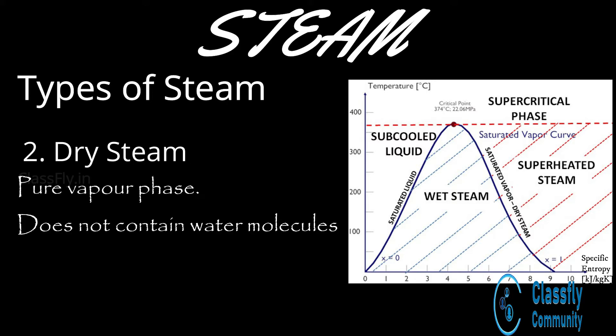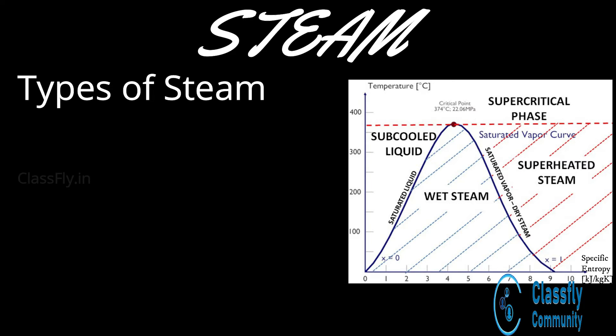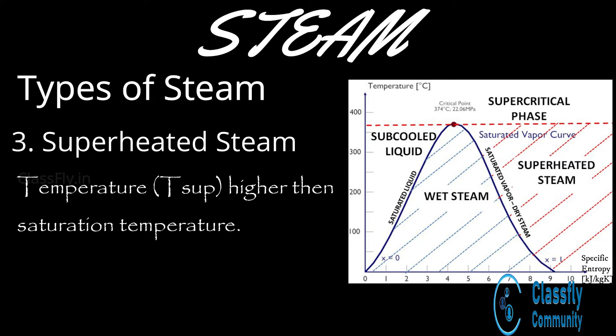In wet steam, the water particles have not yet absorbed the latent heat, and hence result in a two-phase mixture. Next, dry saturated steam is a type of steam that does not contain any particles of water.